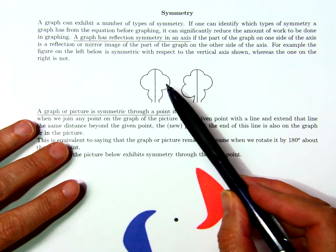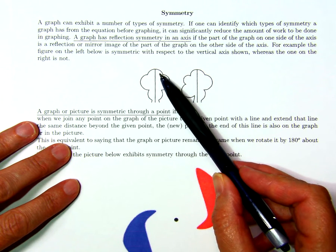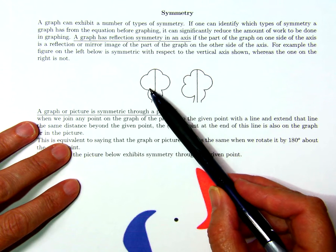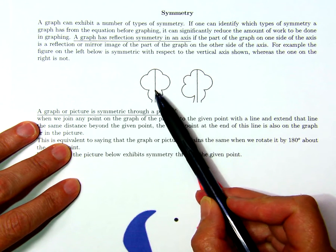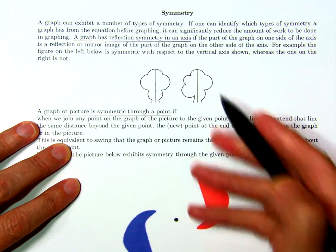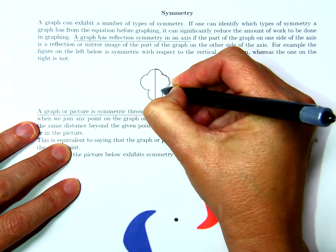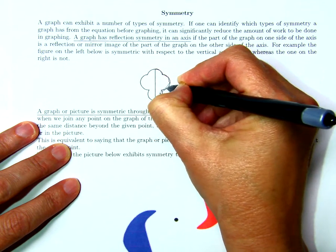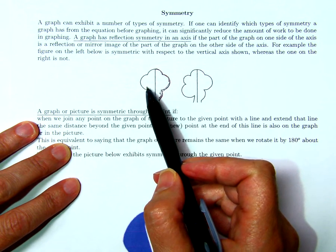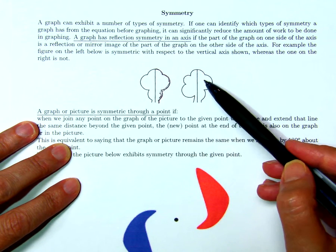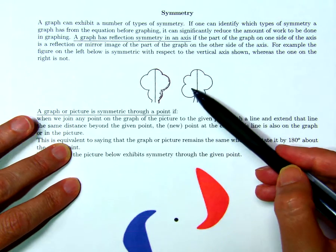The first type of symmetry we look at is symmetry in an axis, and this occurs if the graph on one side of the axis is a mirror image of that part of the graph on the other side of the axis. For example, this graph on the left exhibits reflection symmetry through the vertical axis, and this means that if I were to draw the right-hand side of the graph and fold the page over on the axis, I would get the other half of the graph. On the other hand, this drawing does not have symmetry in the vertical axis, simply because the right-hand side is not a mirror image of the left-hand side.